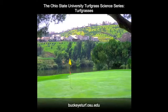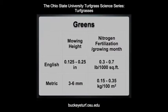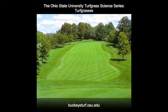From a maintenance perspective, maintaining Poa annua greens is quite similar to that of creeping bentgrass. Poa annua can tolerate low mowing heights and nitrogen fertilization programs similar to creeping bentgrass. Poa annua often predominates in fairways on golf courses in the northern United States and along coastal areas.